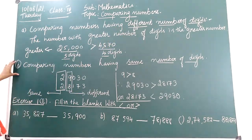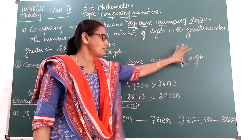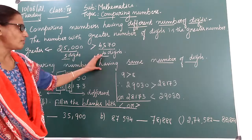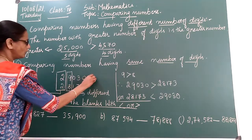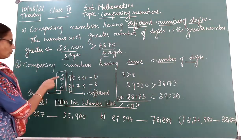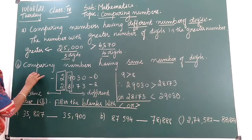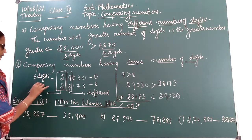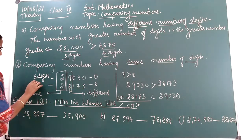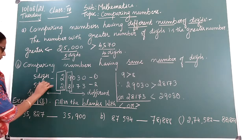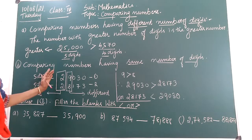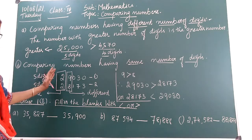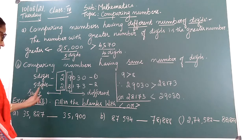Second rule: comparing numbers having same number of digits. See children — the first number and the second number both have 5 digits. How will you compare? Compare the highest place, that is from the left side. If both numbers are the same at that place, you have to move to the next place.